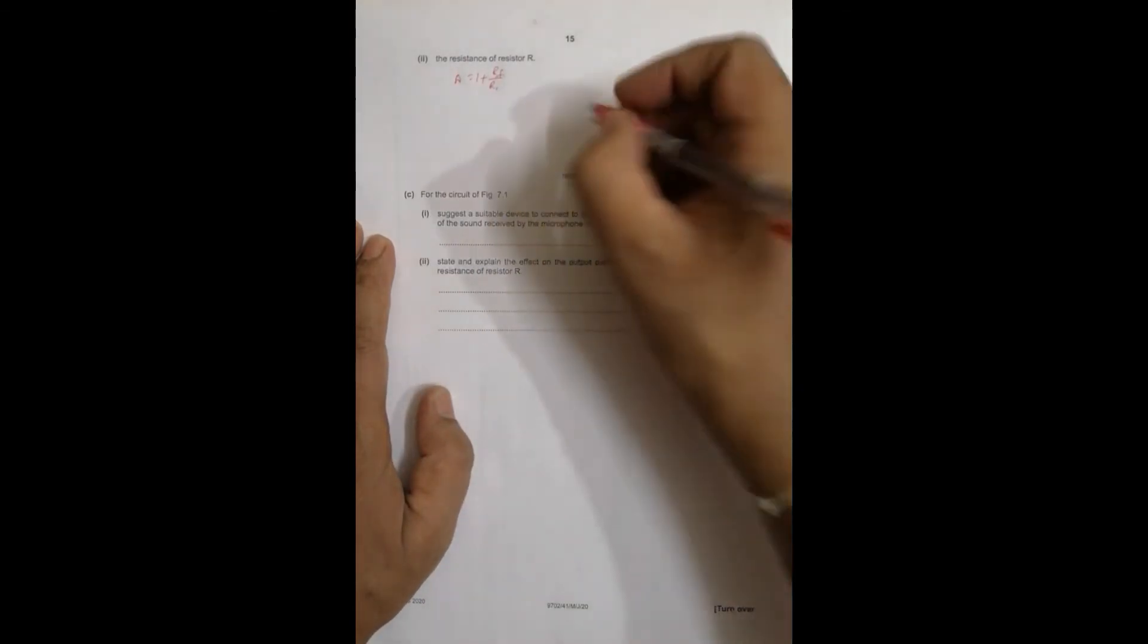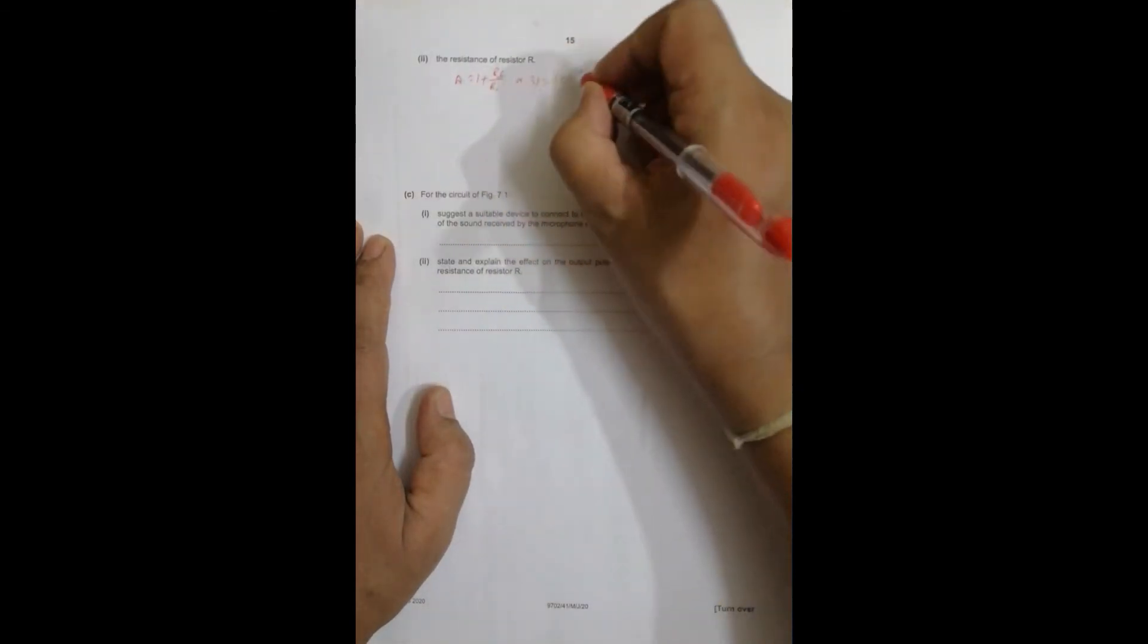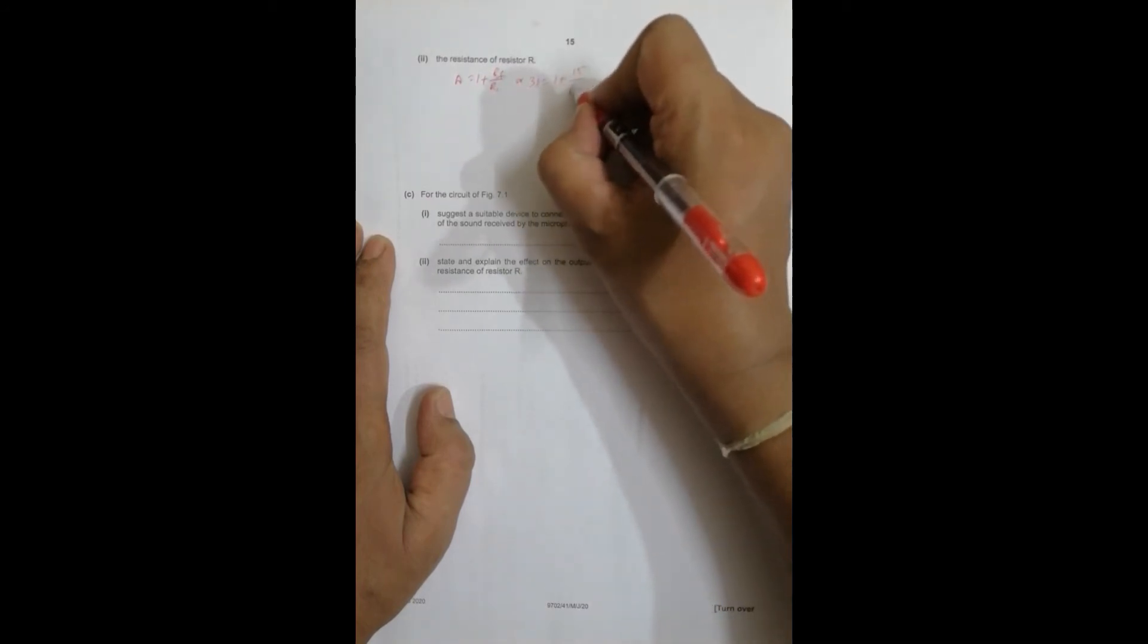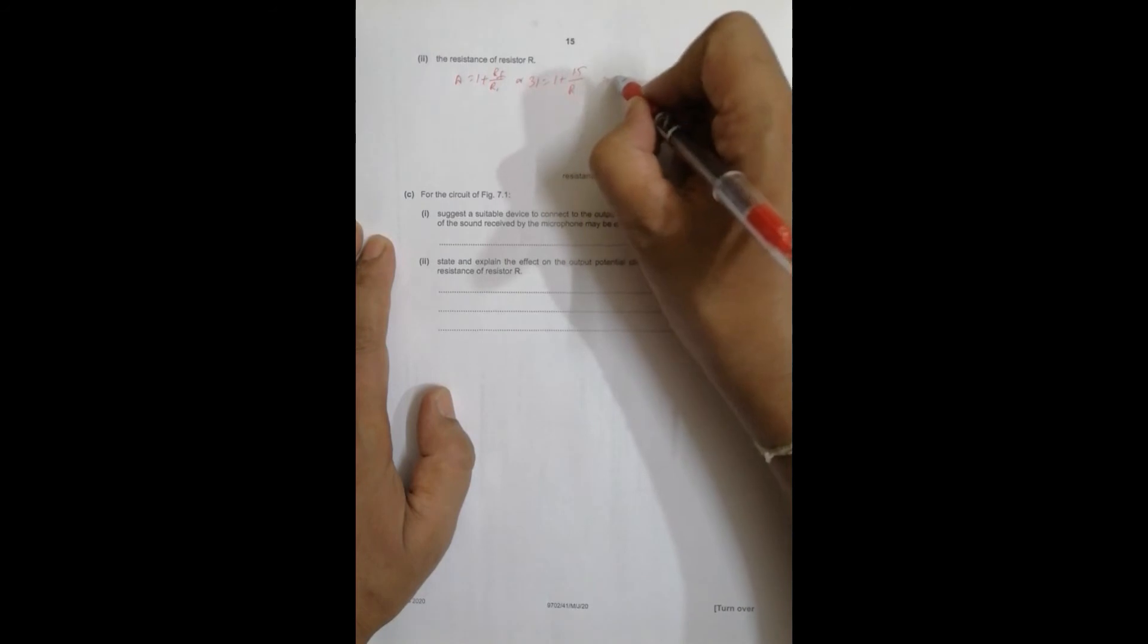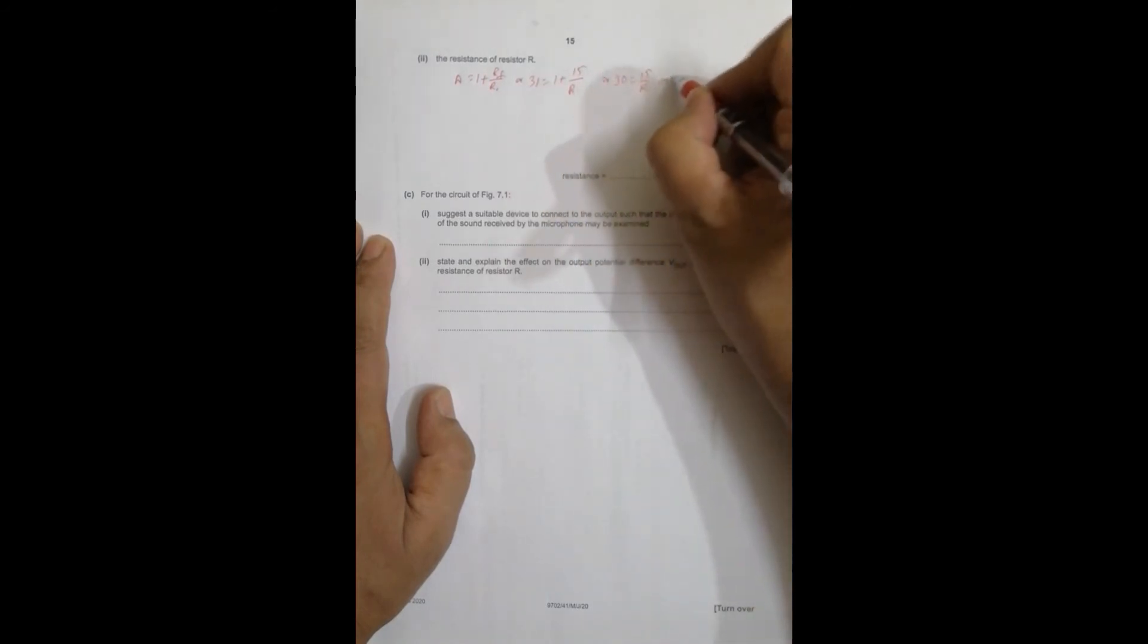So what I can have is 31 is equal to 1 plus 15 K divided by this R. So this gives me 30 is equal to 15 by R or R is equal to 15 by 30 equal to 0.5 kilo ohm.